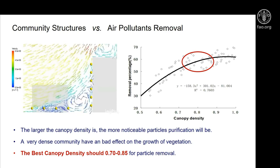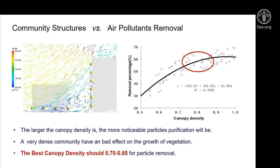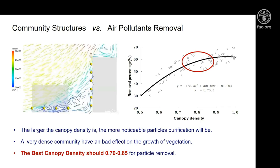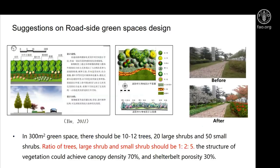The best range should be 70% to 85% for particle removal. Based on these findings, we tried to create a landscape design of urban green space along the road. In 300 square meters of green space, there should be 10 to 12 trees, 20 large shrubs, and 50 small shrubs. The ratio of trees, large shrubs, and small shrubs should be 1 to 2 to 5. This vegetation structure can achieve a canopy density of 70% and a shelterbelt porosity of 30%.